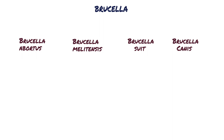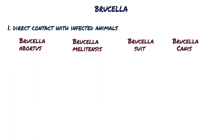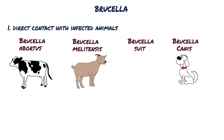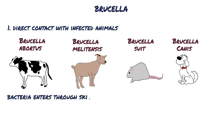Brucella can enter the body one of two ways. First, there may be direct contact with infected animals, and the host is different for each Brucella species. Brucella abortus is transmitted by cattle. Brucella melitensis is transmitted by small ruminants such as goats and sheep. Brucella canis is transmitted by dogs, and Brucella suis is transmitted by swine and rodents. In this case, the bacteria enters through skin lesions, mucus membranes, and inhalation.